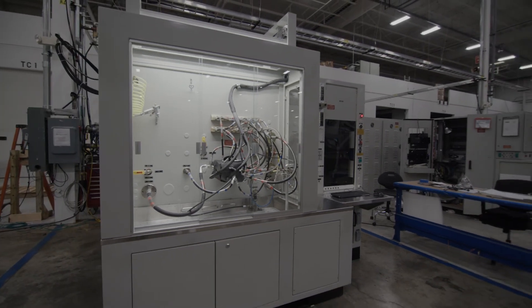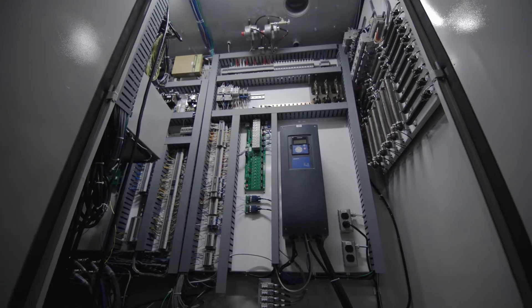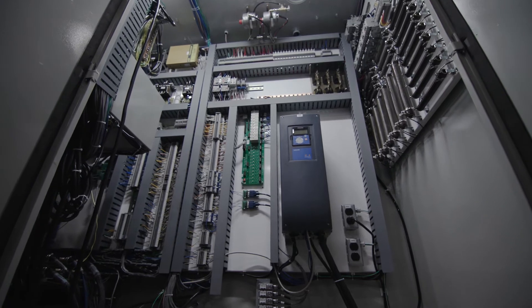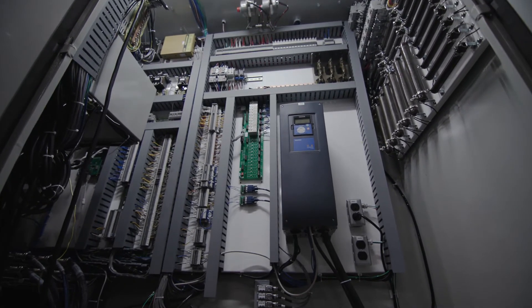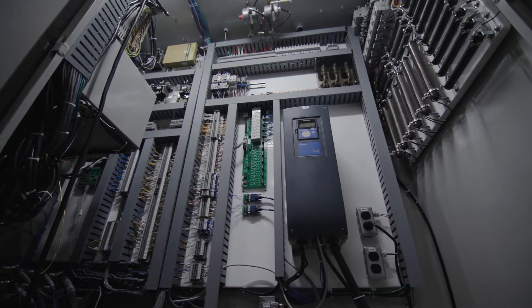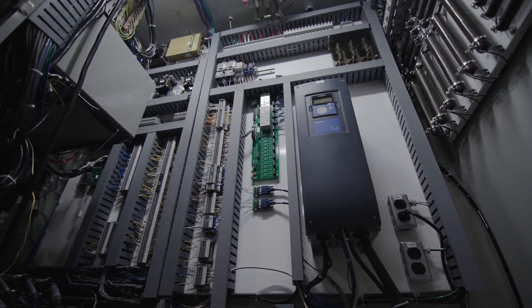An explosion-proof box contains the power control for two blower units that will air purge the electrical cabinet. Power to the electrical cabinet will not turn on until four volumes of air are purged from the electrical cabinet.